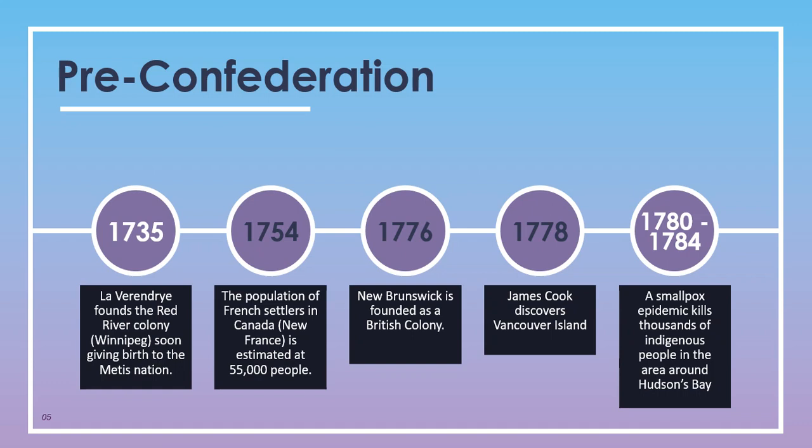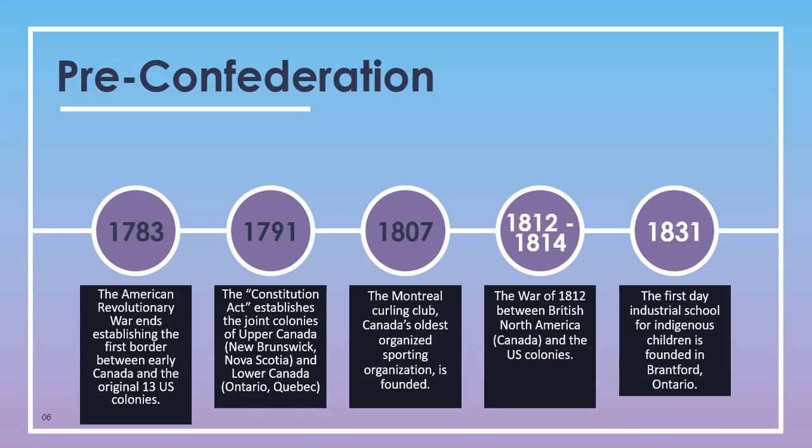Between 1780 and 1784, a smallpox epidemic brought by European settlers killed thousands of indigenous people in the area around Hudson Bay. In 1783, the American Revolutionary War ended and established the first border between early Canada and the original 13 U.S. colonies. In 1791, the Constitution Act established the joint colonies of Upper Canada — New Brunswick and Nova Scotia — and Lower Canada — Ontario and Quebec.